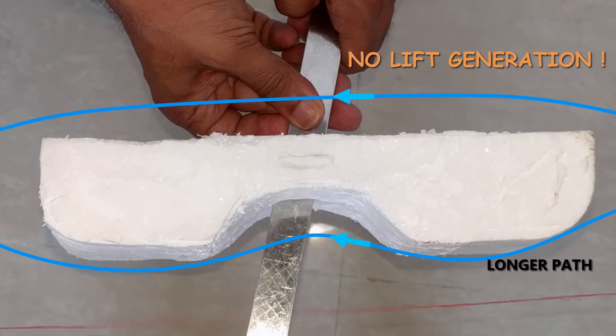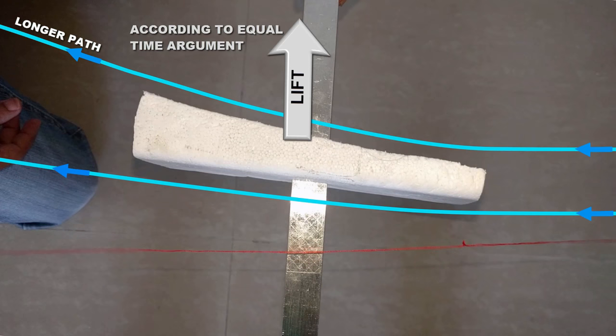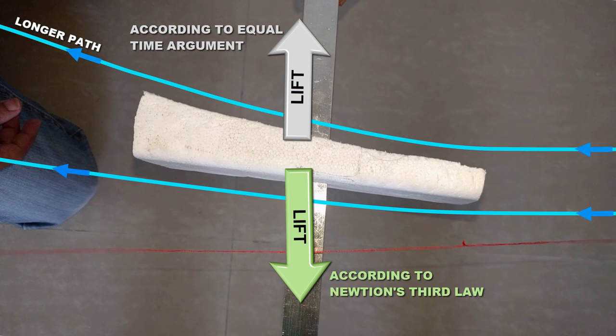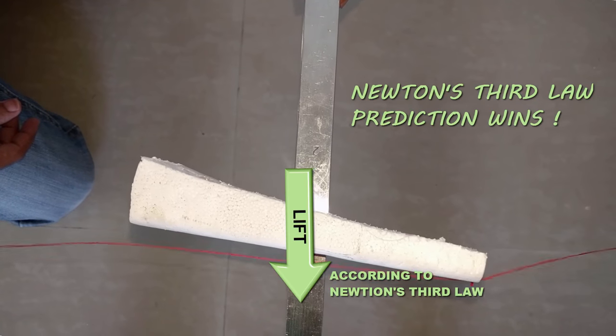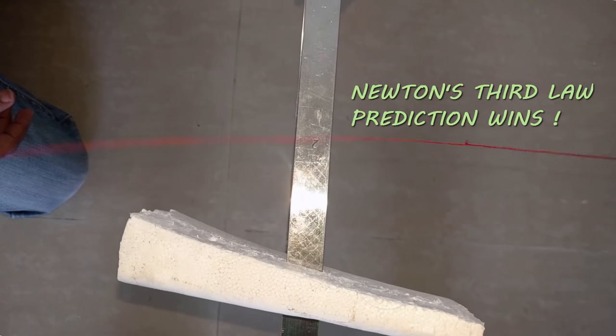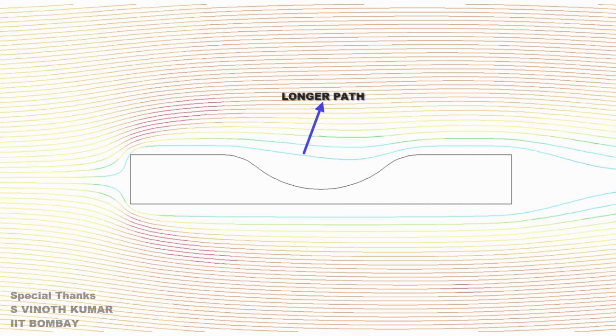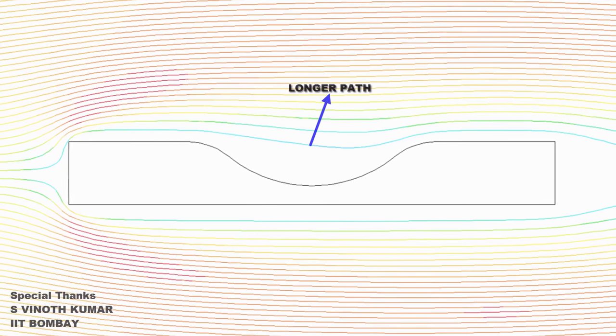For this simple geometry, equal time argument and Newton's third law analysis predicts direction of the lift in different ways. We have even conducted a high-quality CFD analysis to prove the same thing.